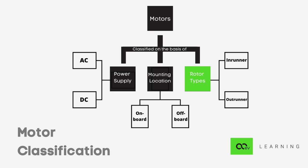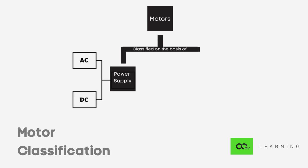Third would be based on rotor types like in-runner where the rotor is inside the stator and out-runner where the rotor is outside the stator. We will take a deeper look at the classification based on power supply. We majorly have AC and DC motors.